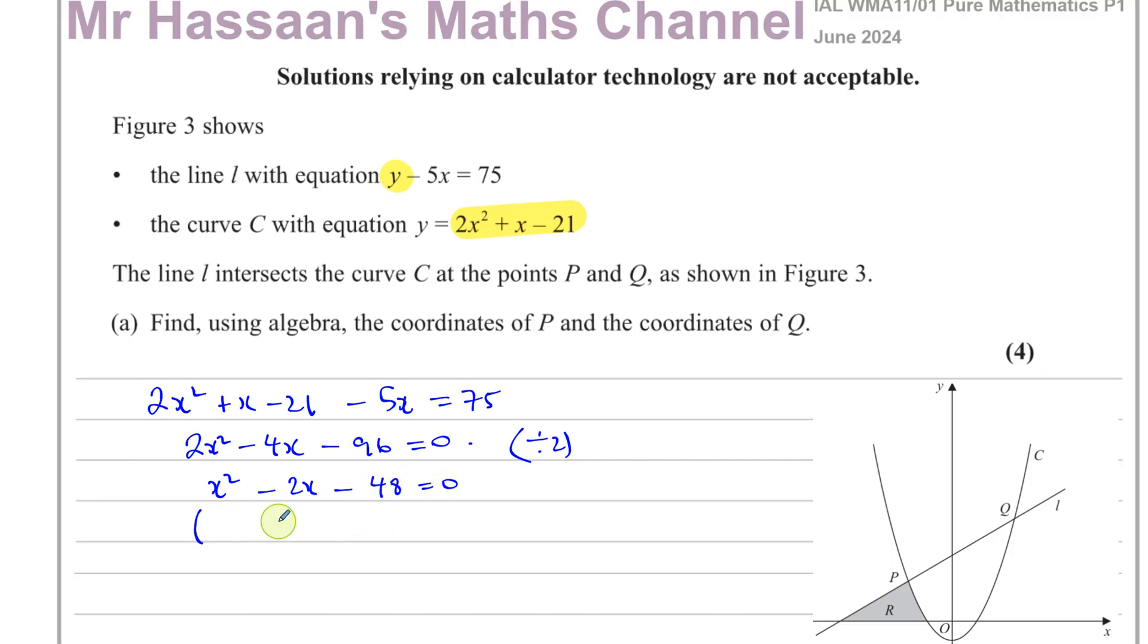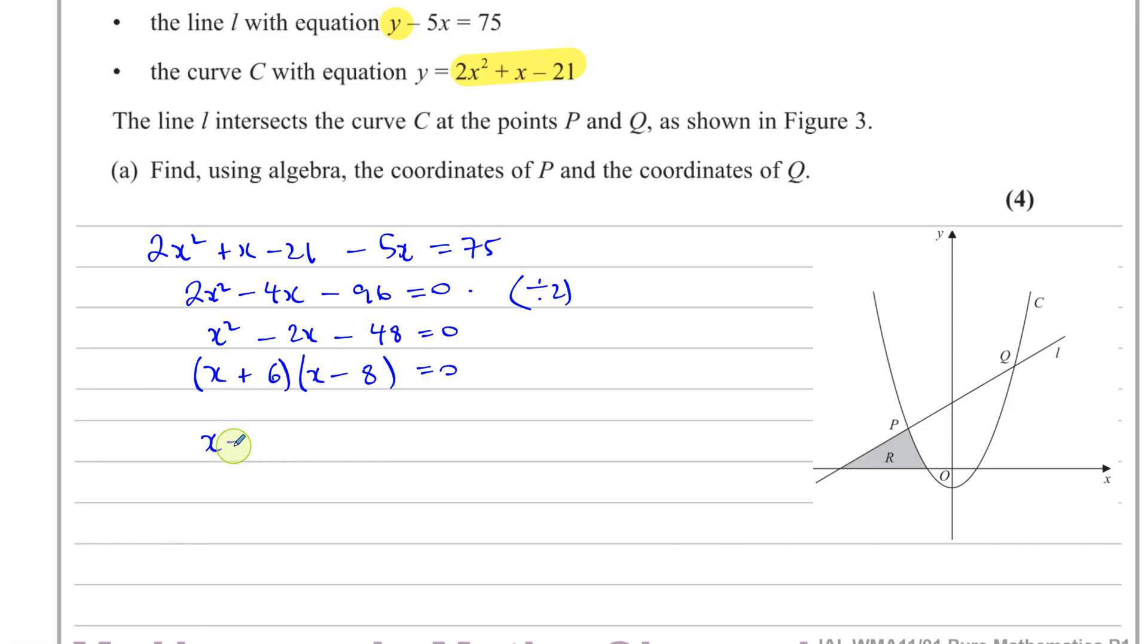So to solve this, I can factorize. I can think of two numbers: when I multiply them together, I get negative 48, when I add them I get negative 2. So they must have different signs, one is positive, one is negative. The numbers that multiply to give you 48, the difference between the numbers: 6 times 8 is 48. So it must be positive 6 and negative 8 because it has to be a negative sum. So we've got x equals negative 6 and x equals 8.